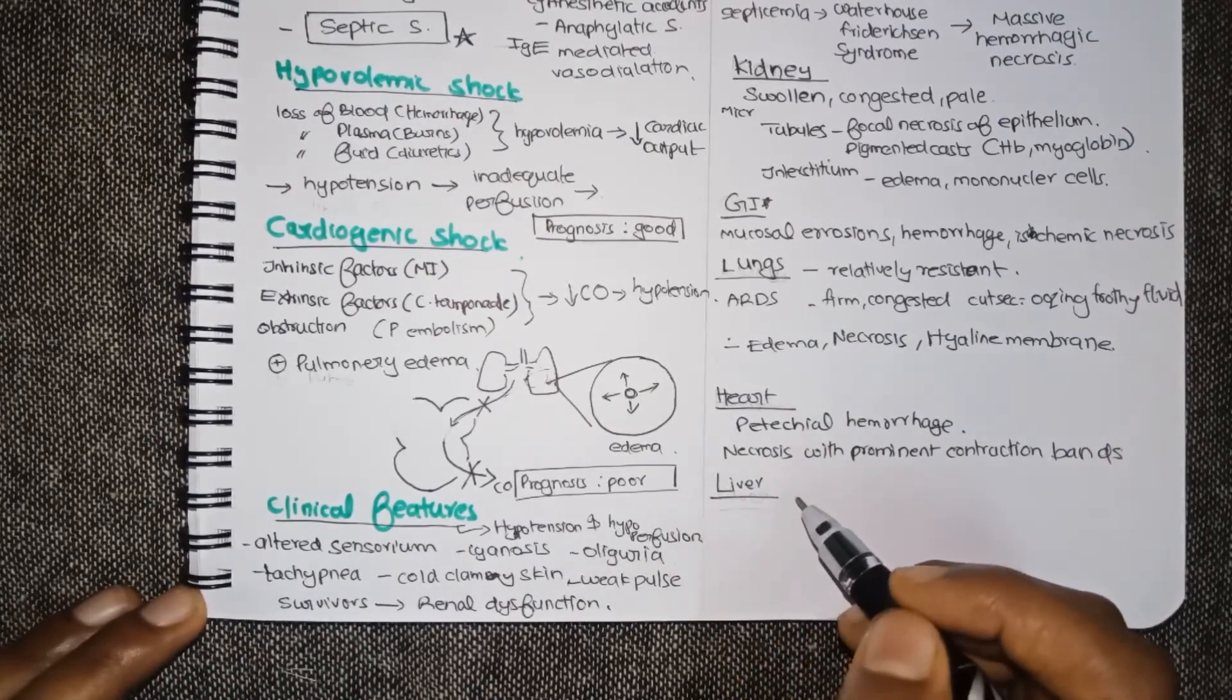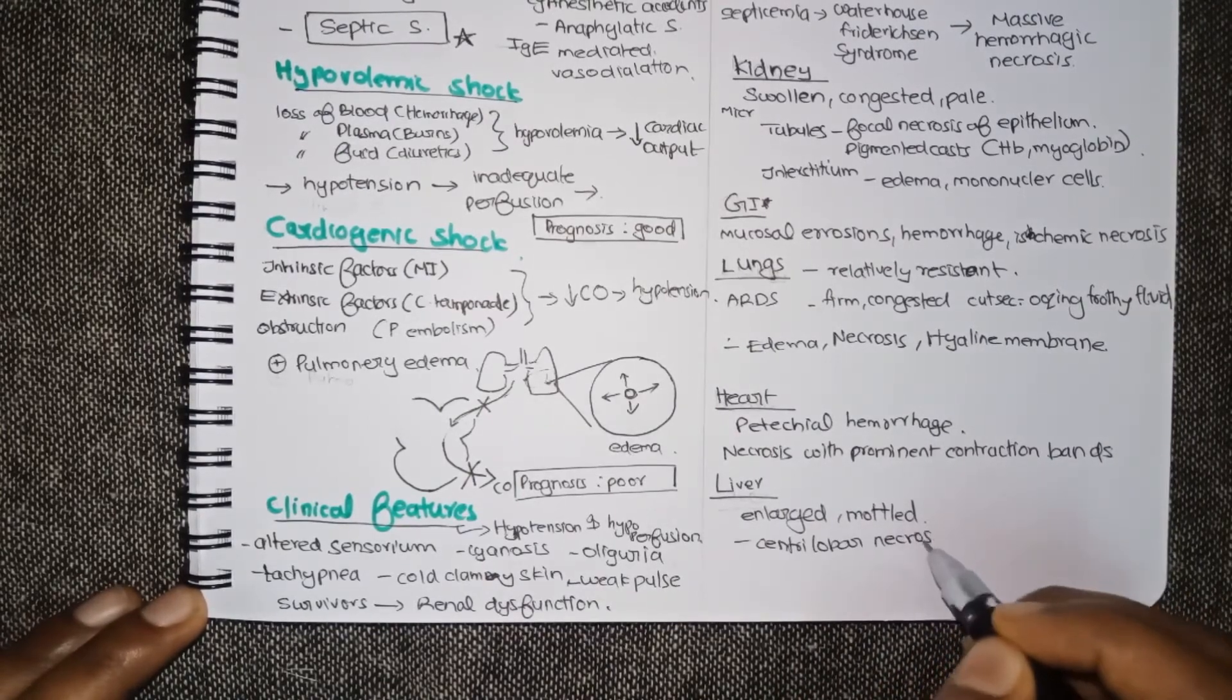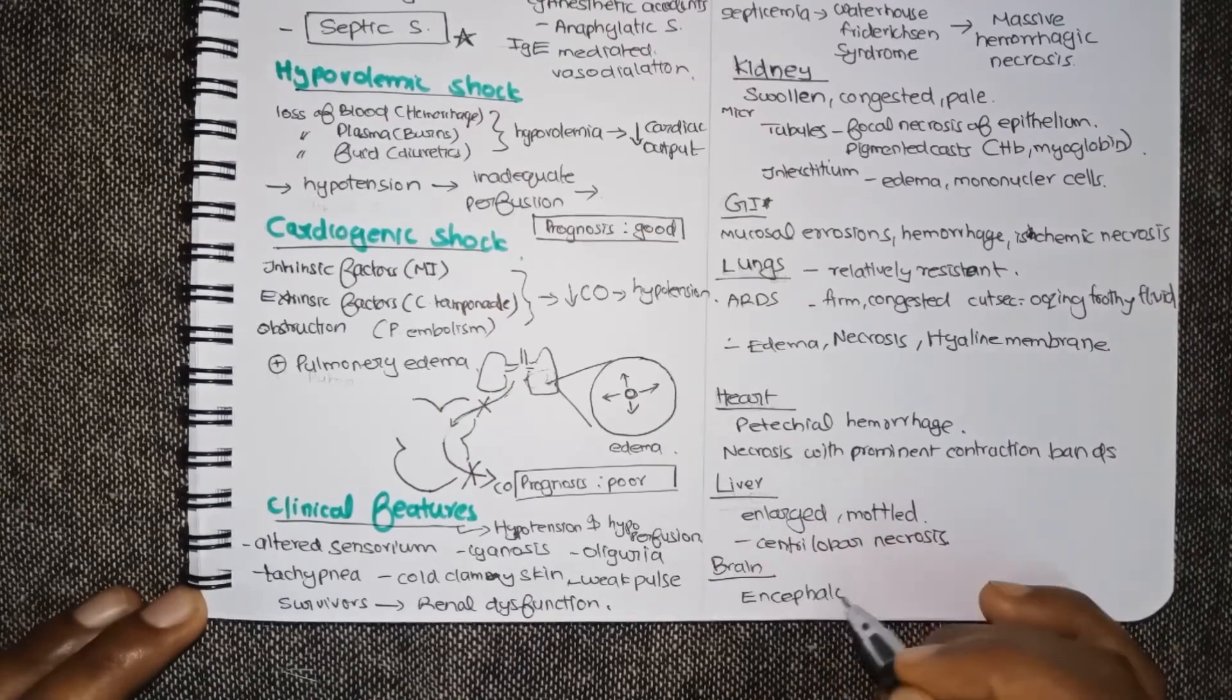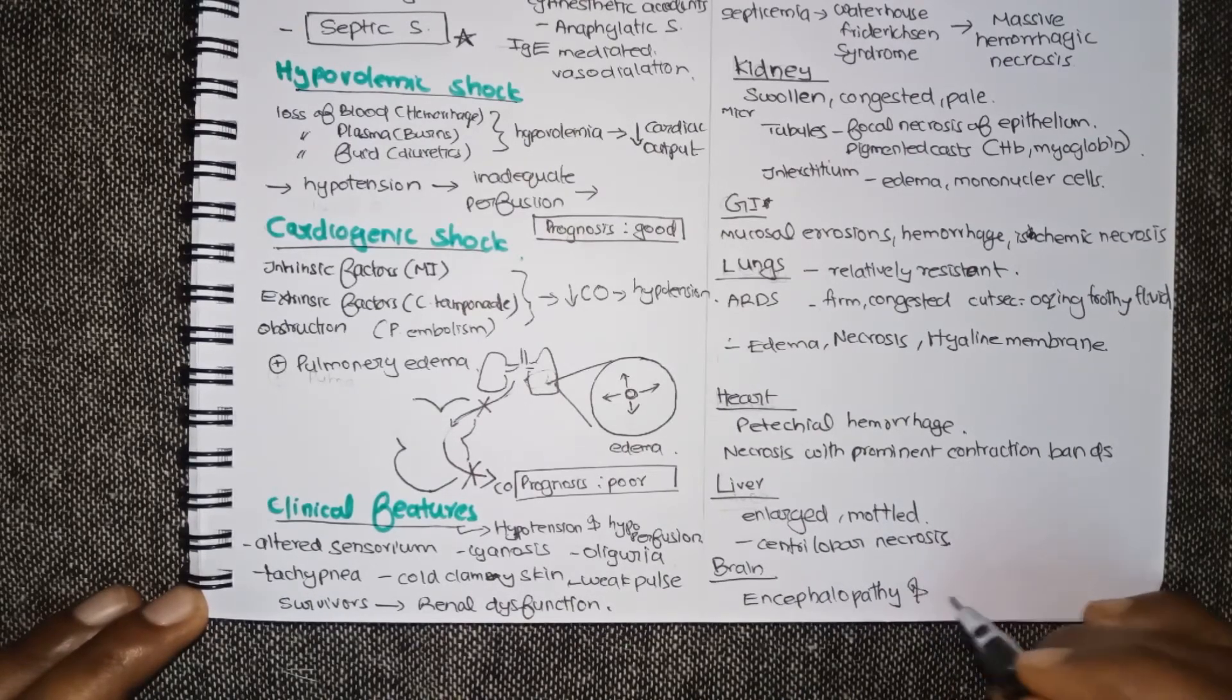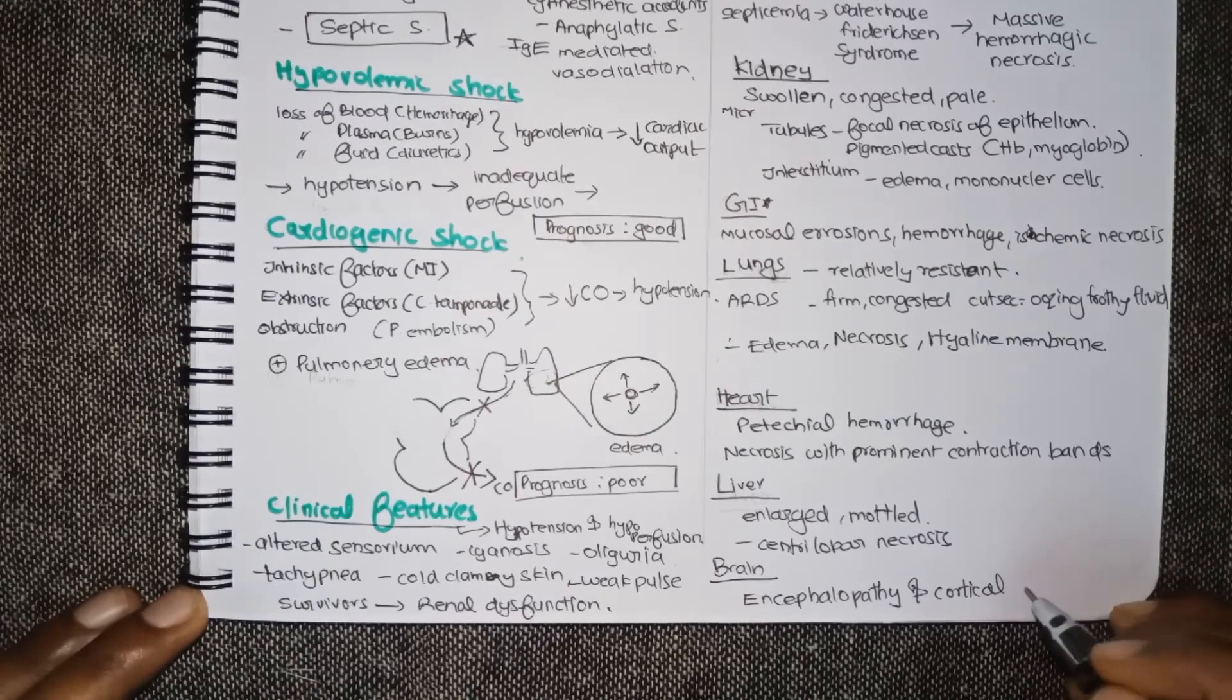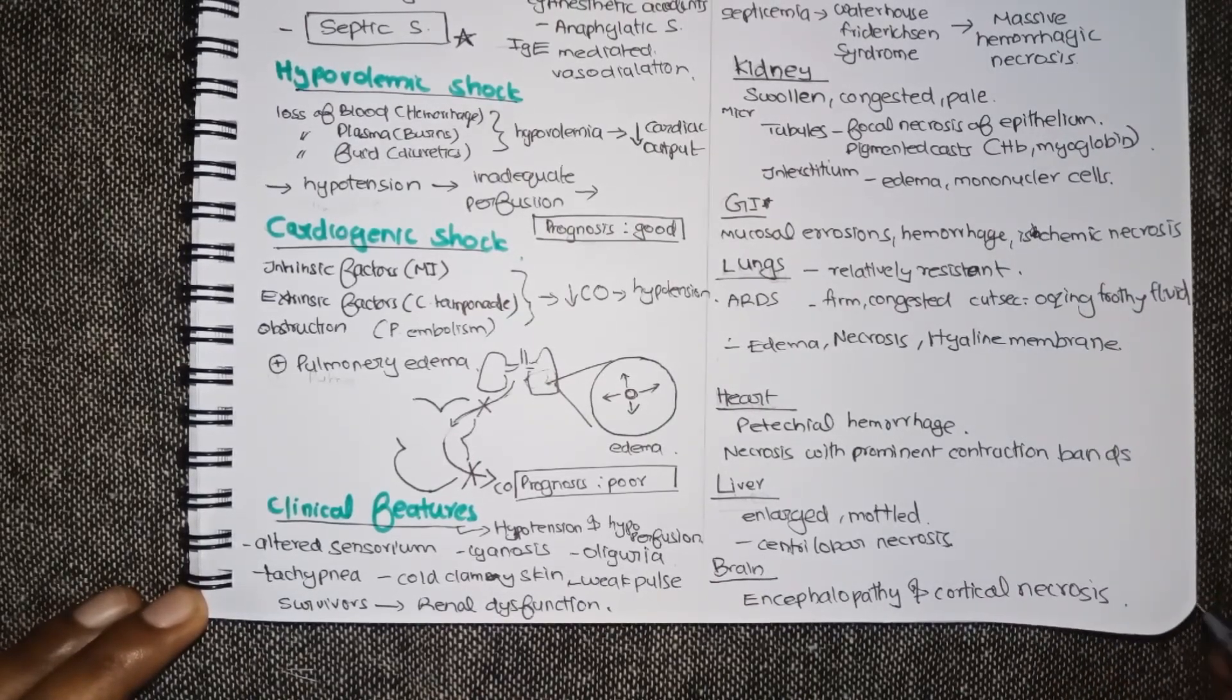Liver is seen enlarged and mottled and microscopy shows centrilobular necrosis. Coming to brain, encephalopathy and cortical necrosis is seen. That winds up this video and you must learn about septic shock. I will be dealing about it in the next video. Thank you.